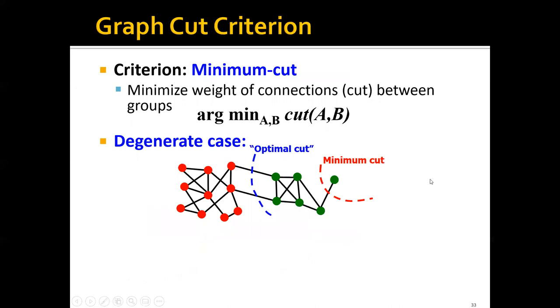Now, after we define the cut, can we simply define a good partition as a partition that can minimize the weight of connections between the groups? Basically, we define this good partition as a partition with minimal cut.